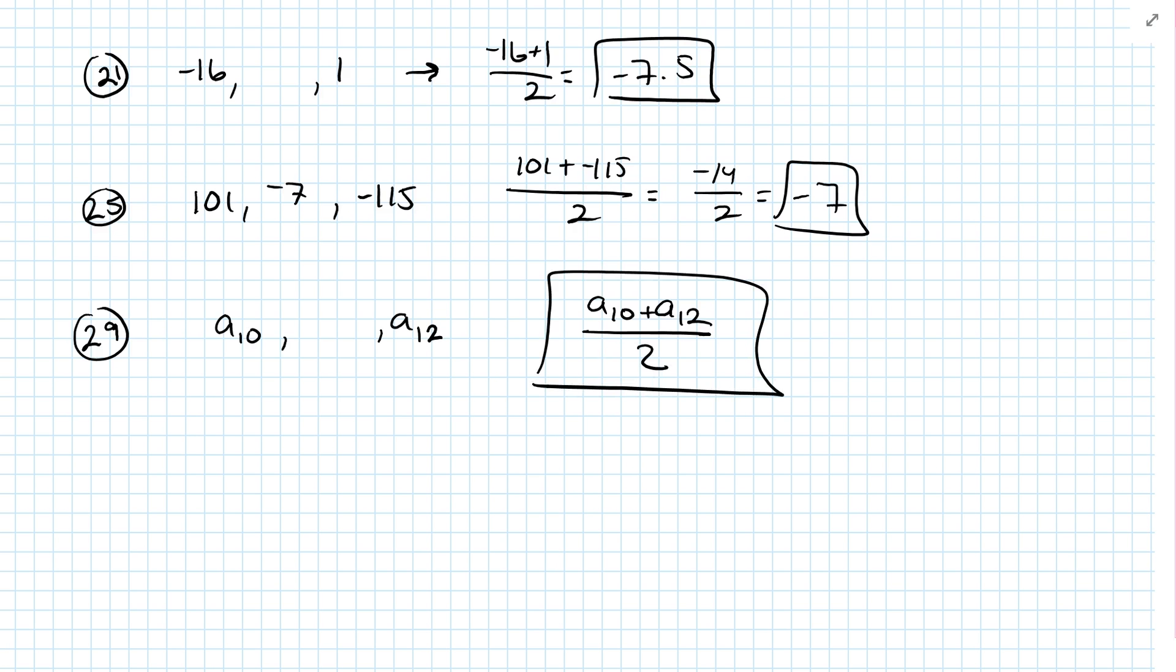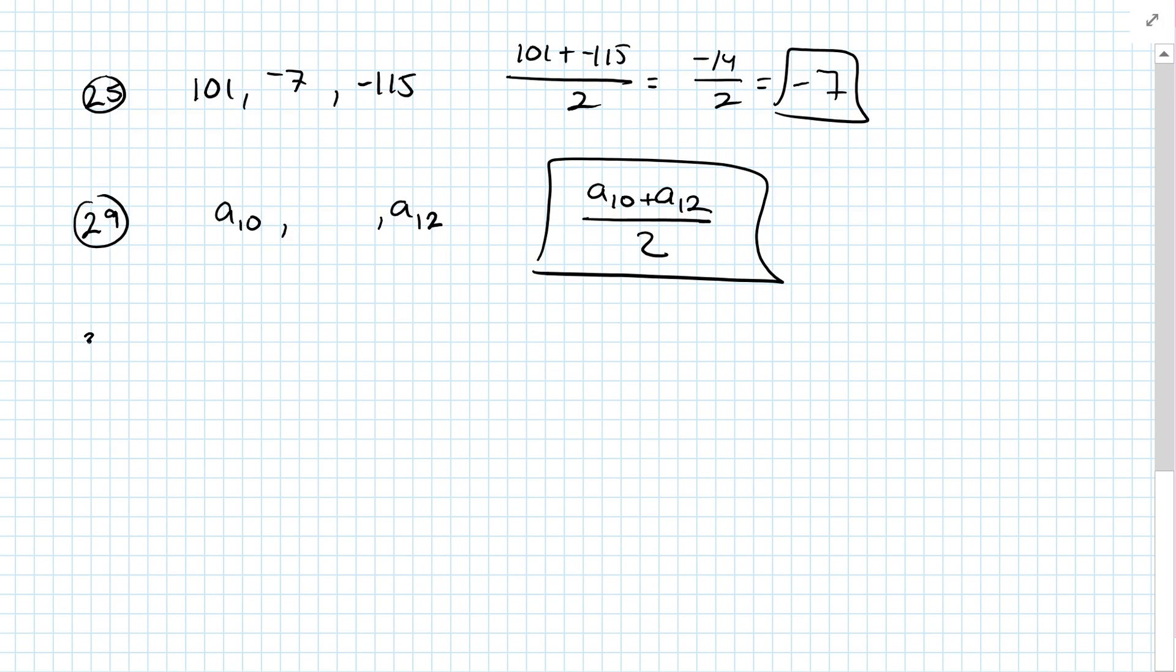Okay, skipping 31, going to 33. Find the arithmetic mean of the given terms. So 33 looks like this. A of N minus 1 equals 21. A of N plus 1 equals 5. So A of N should be the sum of those over 2. It should be 13. So the A of N is 13.